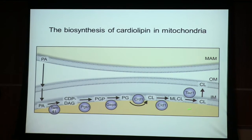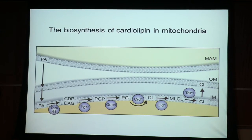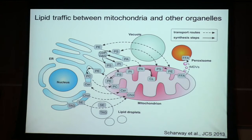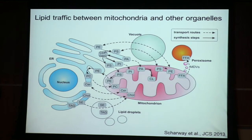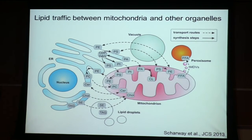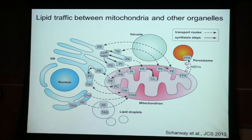The synthesis of cardiolipin starts from a precursor phospholipid, phosphatidic acid, which is imported from the endoplasmic reticulum. The ER is the major site of phospholipid synthesis in the cell. This diagram highlights that many lipids and phospholipids are synthesized in the ER and then redistributed to different cellular organelles, including the mitochondria.